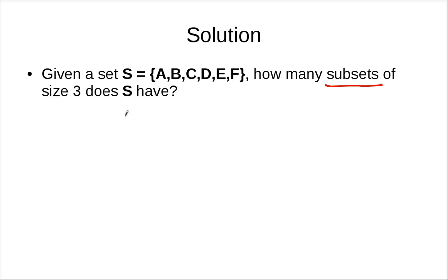count the number of ordered arrangements of size 3. So how many are there? The first letter you have six choices, then you have five choices for the second one, and only four choices for the third one.